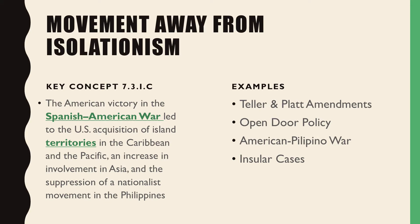The Rough Riders became famous for their charges up Kettle Hill and San Juan Hill. Theodore Roosevelt saw battle — he was Lieutenant Colonel, and by the end of the Spanish-American War he was raised to the rank of Colonel. He was already pretty famous in America, and this only made him more famous: Theodore Roosevelt running up the sides of mountains to take on the Spanish.